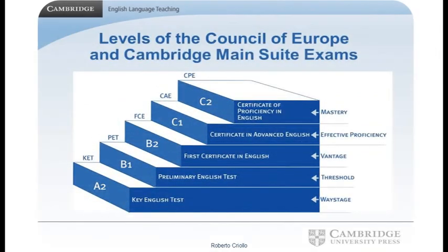I selected Cambridge over Trinity College London — not because Trinity has lower quality, but because it is more difficult to take: there are few examination centers and it is expensive. Cambridge is the best option. The Cambridge suite covers: Key English Test at A2, Preliminary at B1, First at B2, Advanced at C1, and Proficiency at C2. You're likely interested in B2 First, as that is the level you will be required to reach at the end.